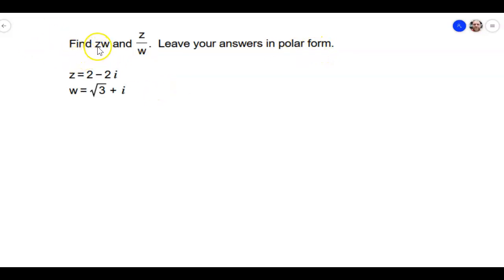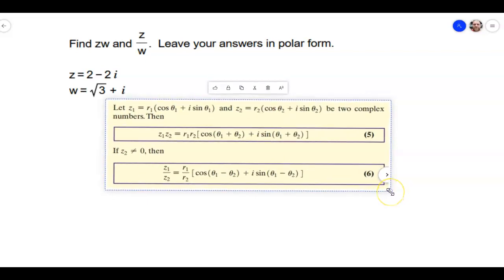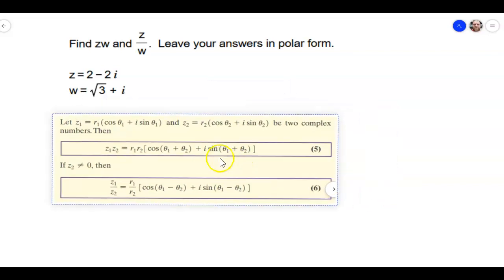But here's the problem. It says find z times w and z divided by w. Leave your answers in polar form and they give us these two complex numbers here: 2 minus 2i and the square root of 3 plus i. This is really just about doing some formulas here. So the main formula that we need is on page 604 here. And this is the products and quotients of complex numbers.